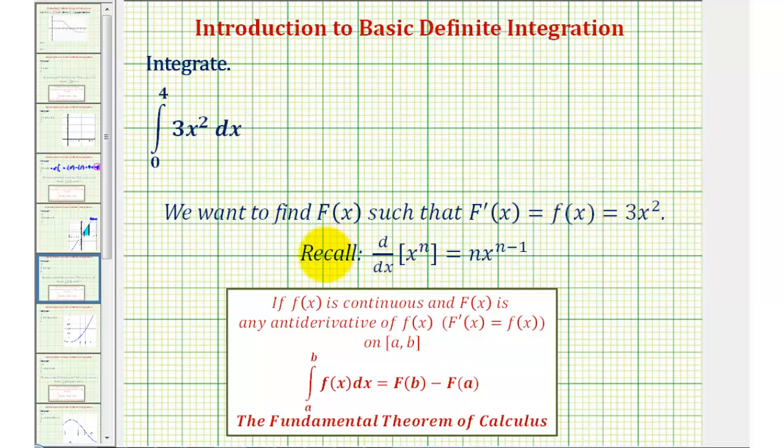So if we think about the power rule of differentiation given here, we're trying to find a function in this form that would be equal to three x squared. Well notice if we had x to the third, the derivative would be three x squared, and therefore we can use x to the third as our anti-derivative function to evaluate this definite integral.